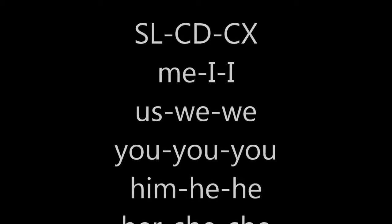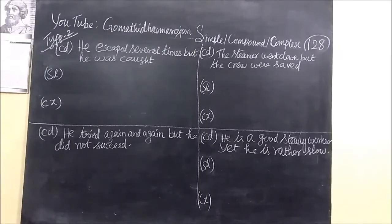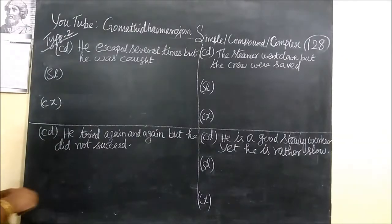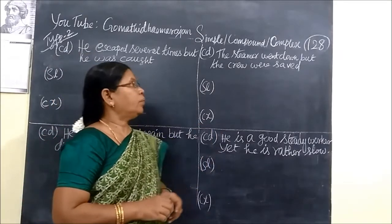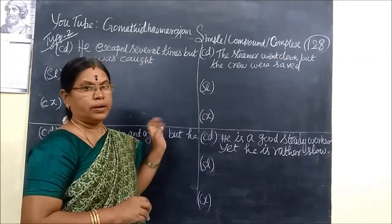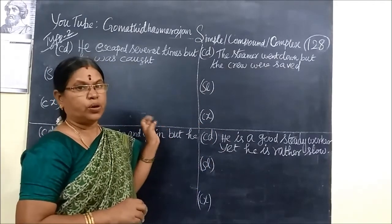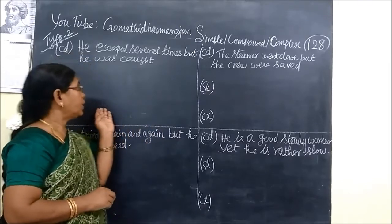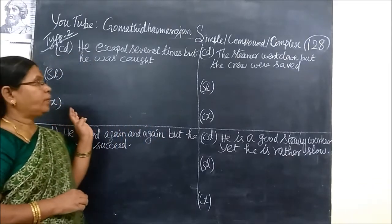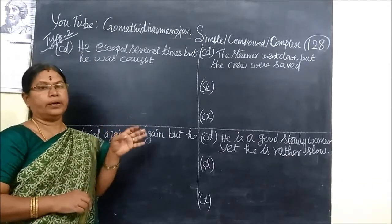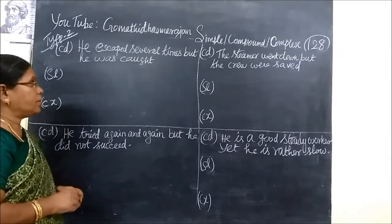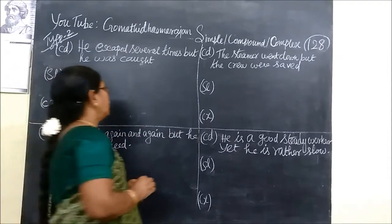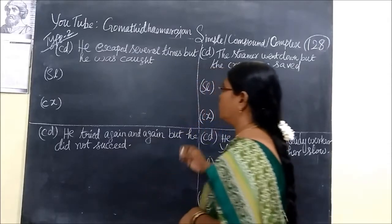Good evening. Today we want to take pass 128 on simple, compound, and complex sentences. We see the second type, using 'in spite of,' 'but,' and 'though' or 'although.' You see the first one: He escaped several times but he was caught.